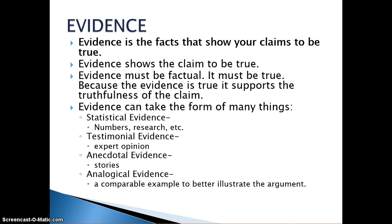Now, moving on to evidence. Evidence is the facts that show your claims to be true. Evidence has to be factual — these things have to be real. You can't make them up or pull them out of thin air. They're not debatable and they're not opinion-based. Evidence can take four basic forms. The first is statistical evidence, which is made up of numbers or research. For our argument about Mr. Jernigan, we could use statistical evidence such as: 98% of students on an exit survey commented on how hilarious Mr. Jernigan's class was. That's statistical evidence — it takes the form of numbers, it's verifiable, it's hard to argue with, and it's concrete.